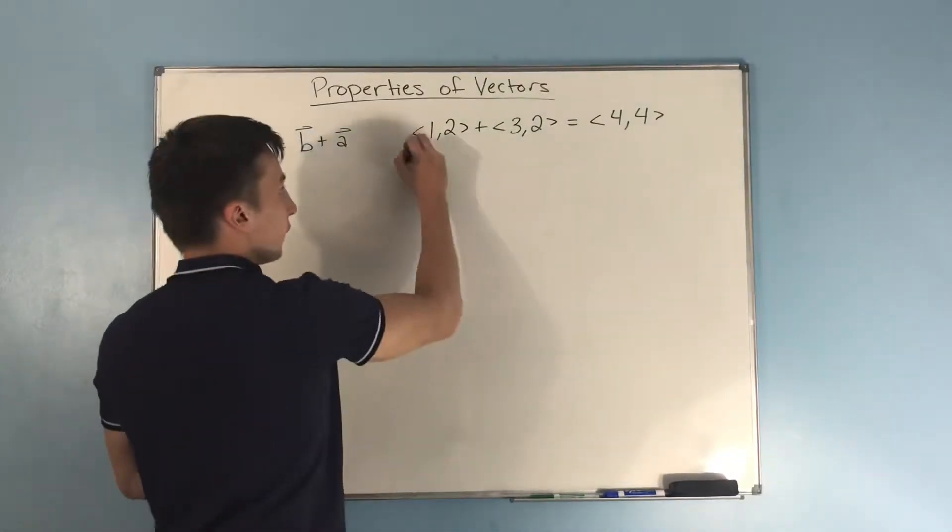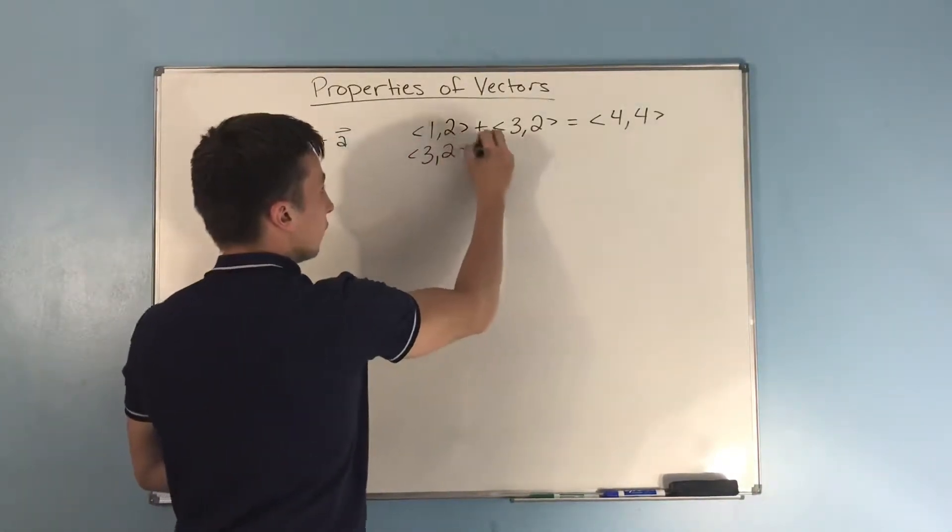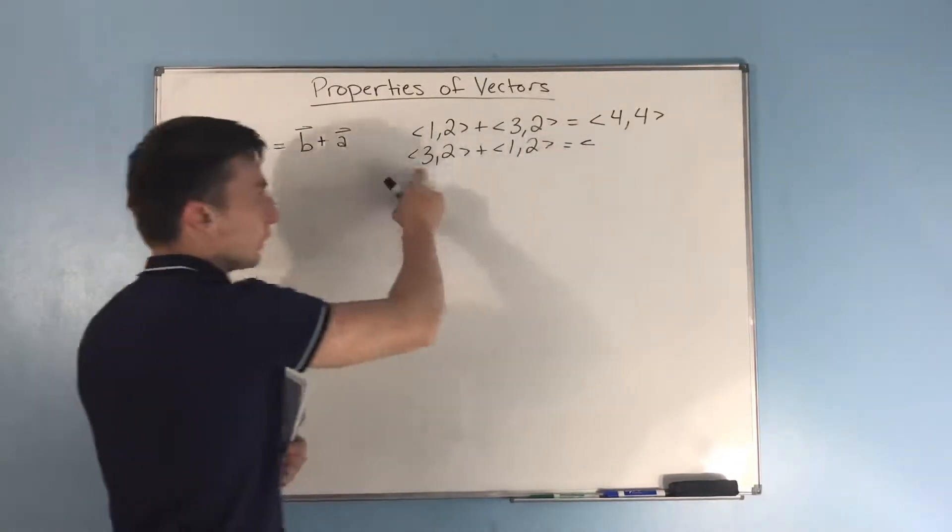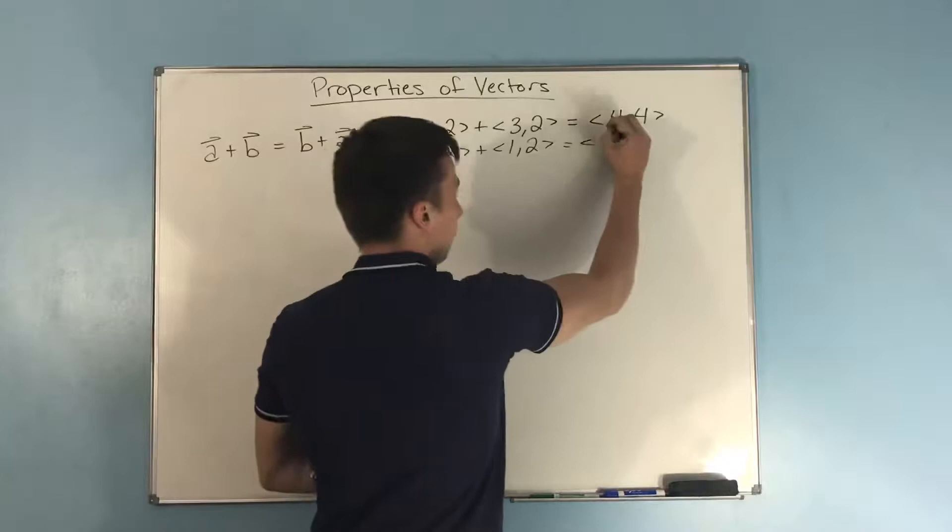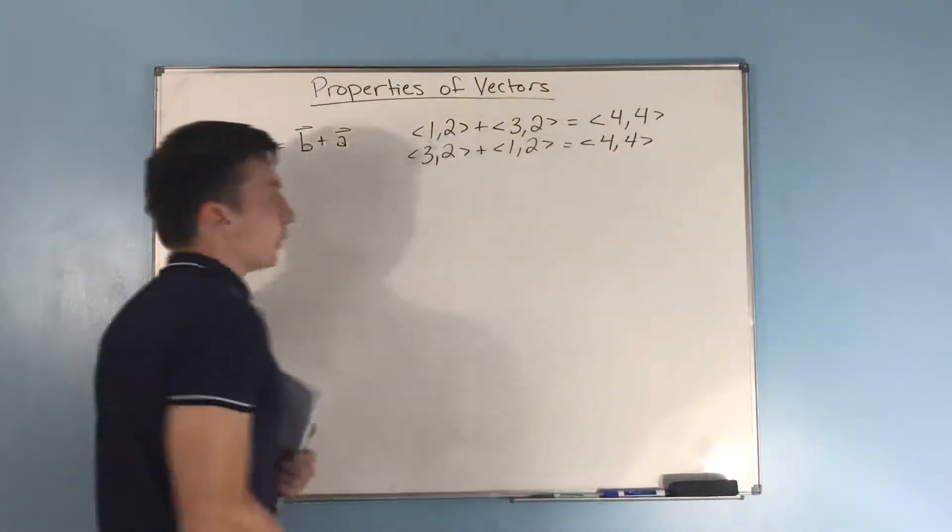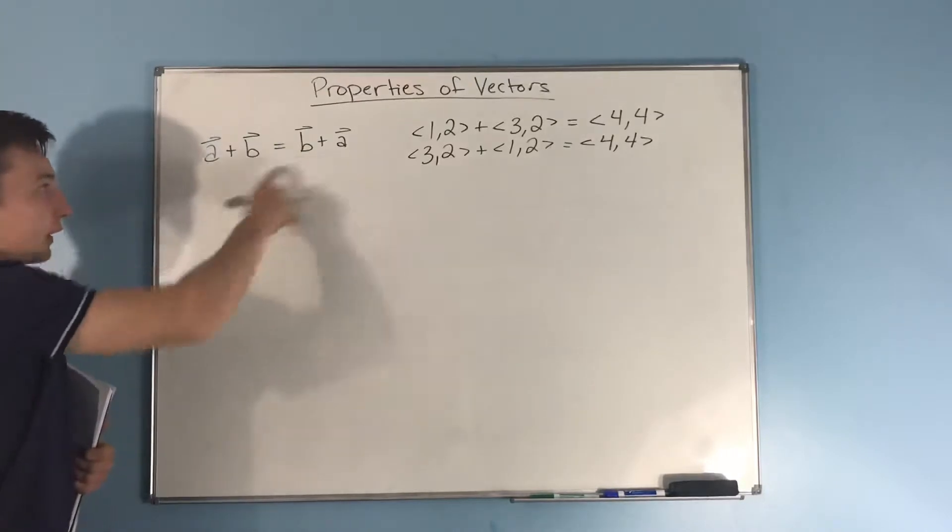If you switch the order of things, 3,2 plus 1,2, well you're still adding up the components of the vectors, you get 3 and 1 is 4, and 2 and 2 is 4. So it makes sense for this to work.